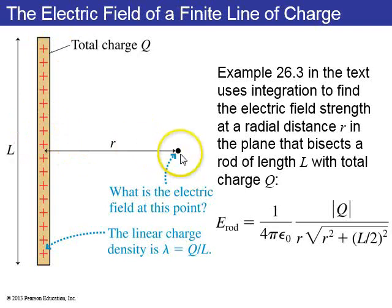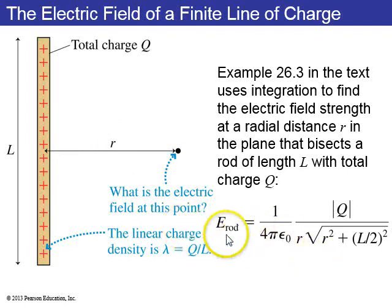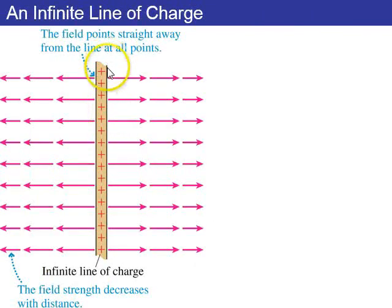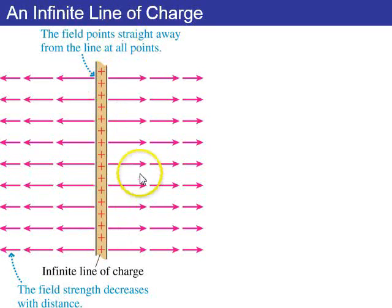As for direction: if the rod is positive, the field points away from the rod; if negative, it points toward the rod. This equation gives the magnitude, which is why there's an absolute value sign around Q. Next, consider making L larger and larger for an infinite line of charge. By symmetry, the field must point straight away from the line at all points.